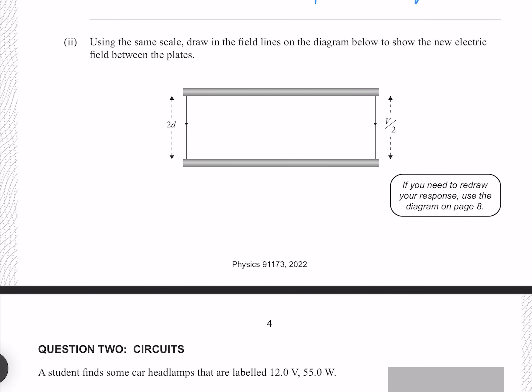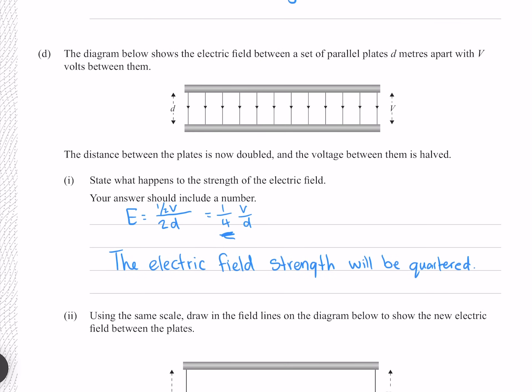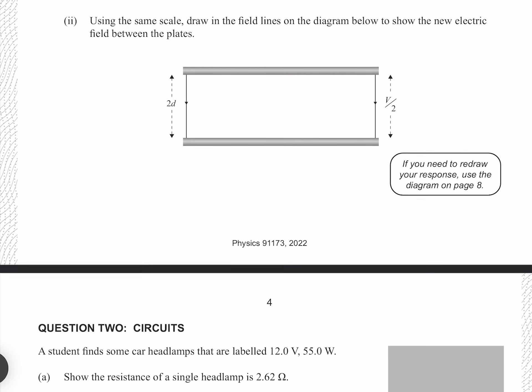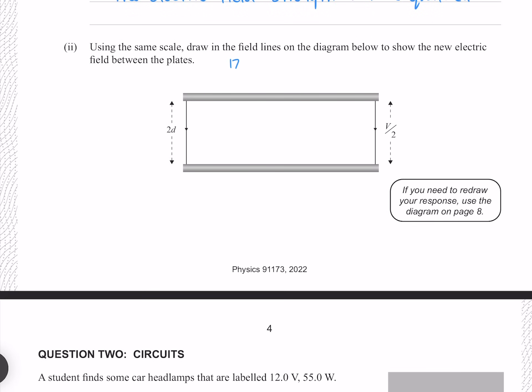Using the same scale, draw in the field lines on the diagram to show the new electric field between the plates. The number of field lines is proportional to the strength of the electric field. The original diagram has 12 lines. Since the field strength is quartered, we need 12 divided by 4, which gives 3. We already have 2, so we just need to add 1.